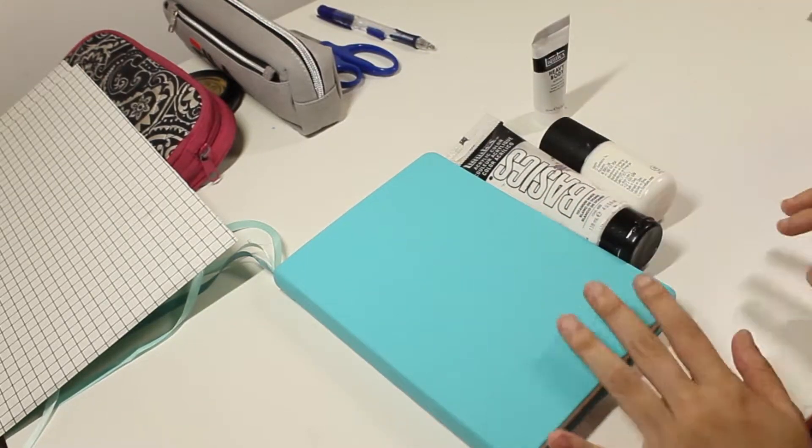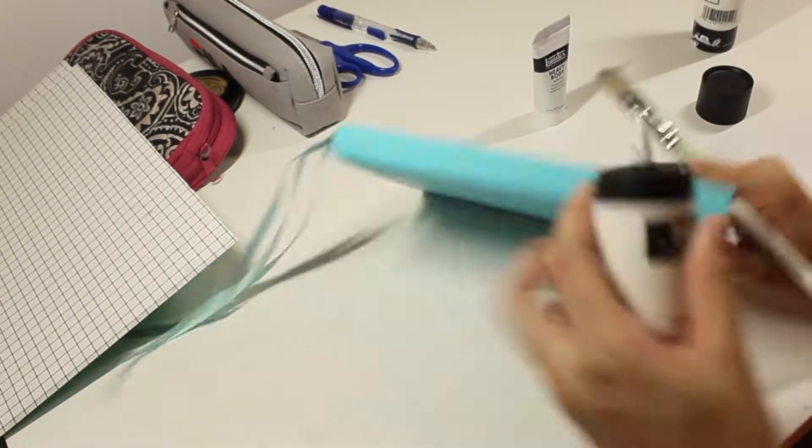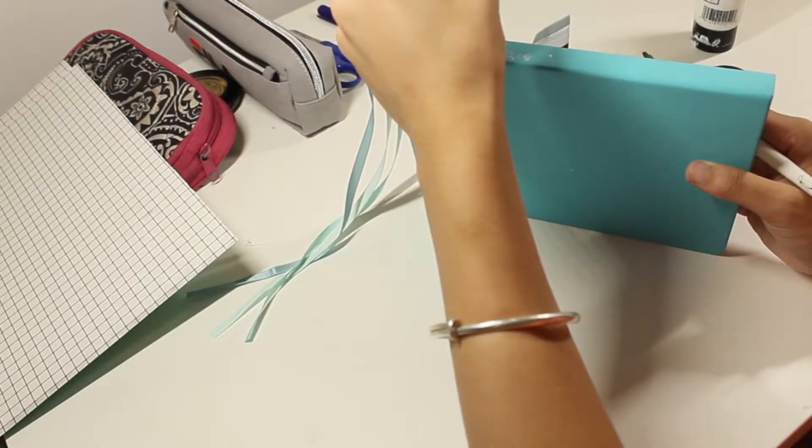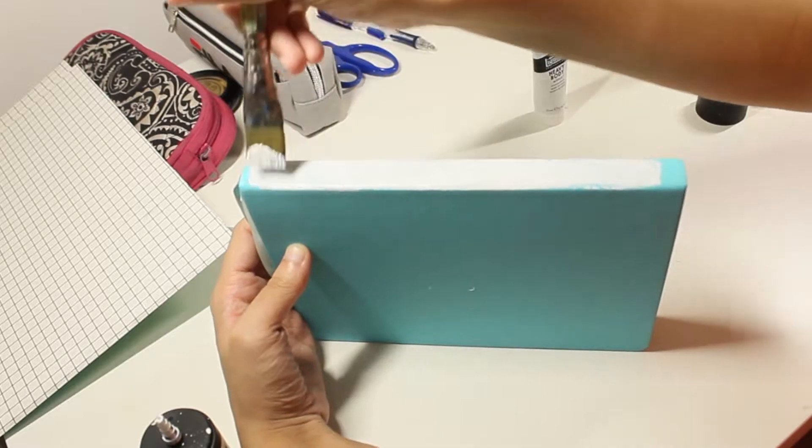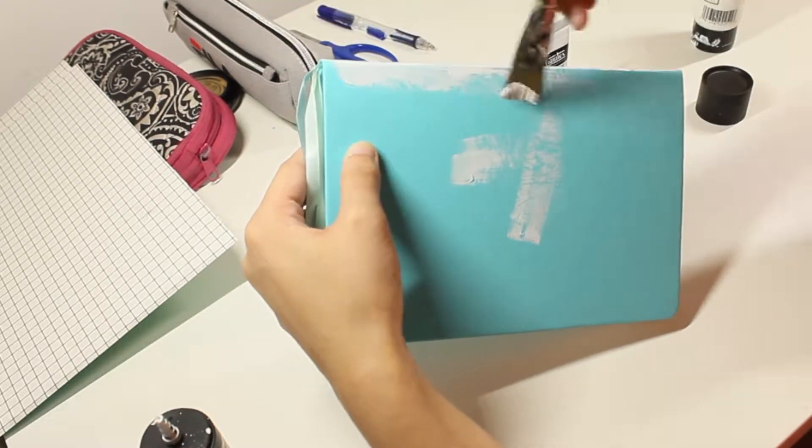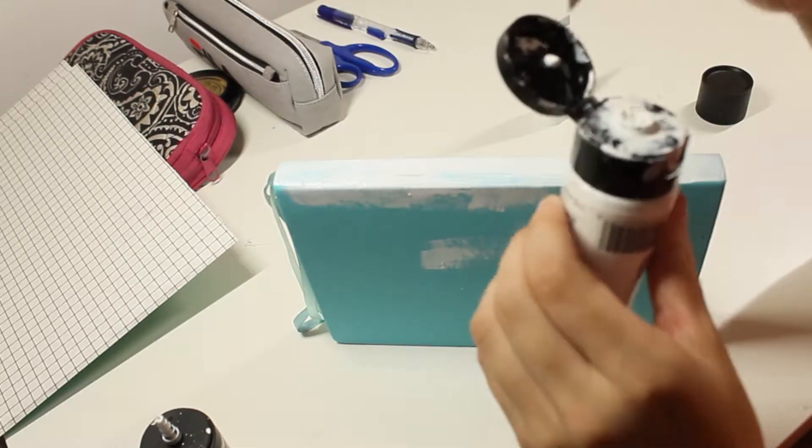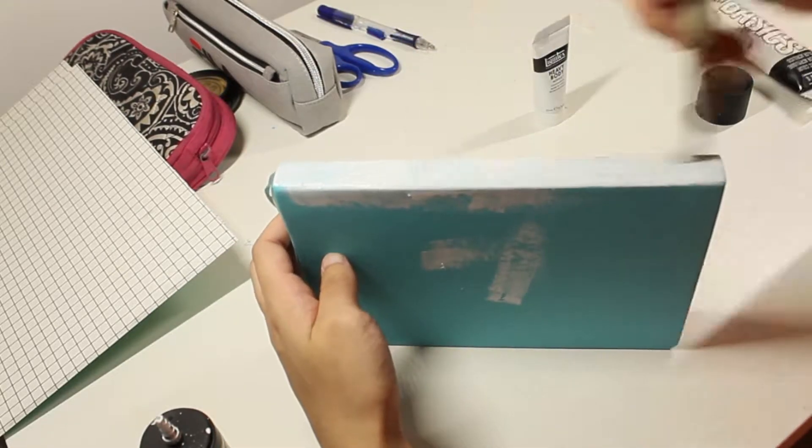The color doesn't really suit the general colors of the themes that I usually have, so I decided to give it a DIY makeover. I painted the spine white using acrylic paint but I didn't paint the front or the back because I'm going to be covering it up using an old folder.